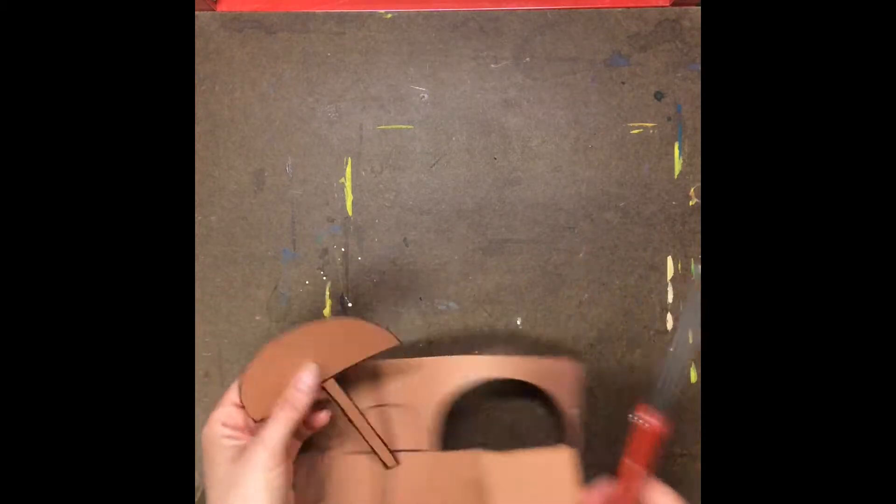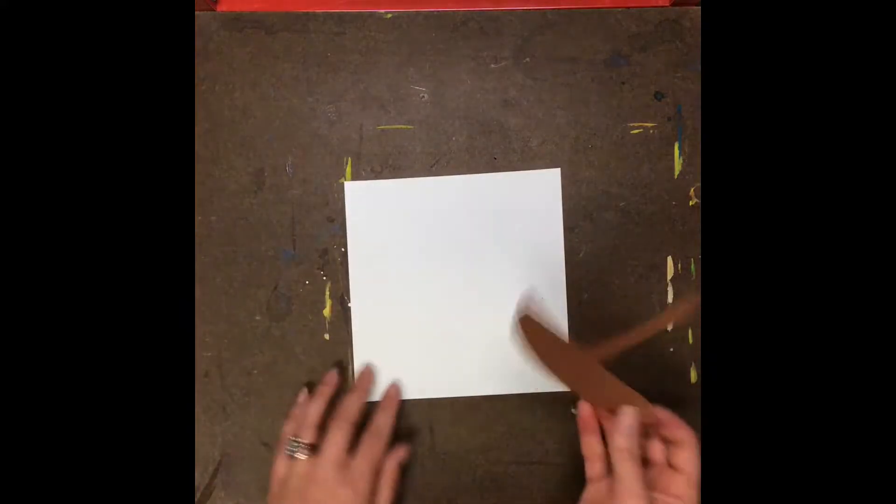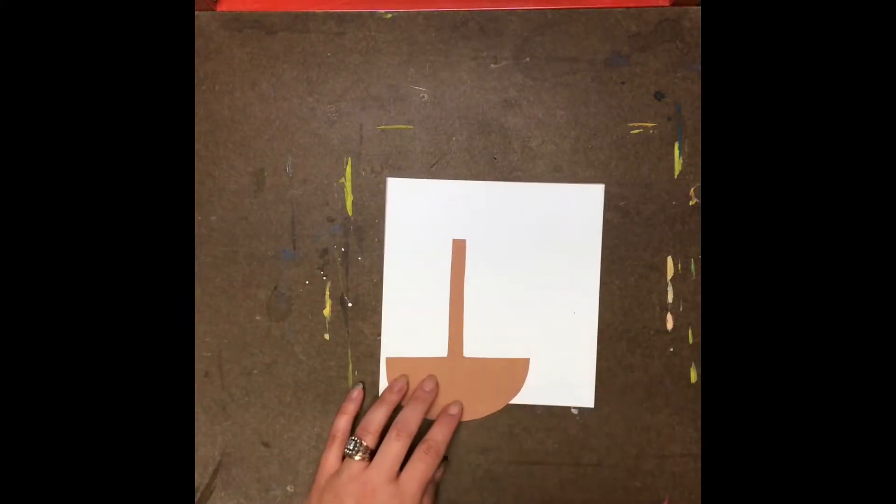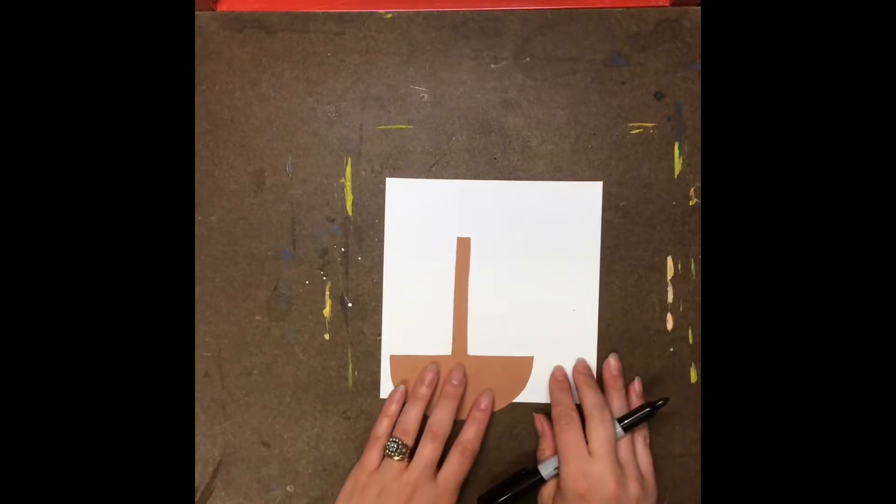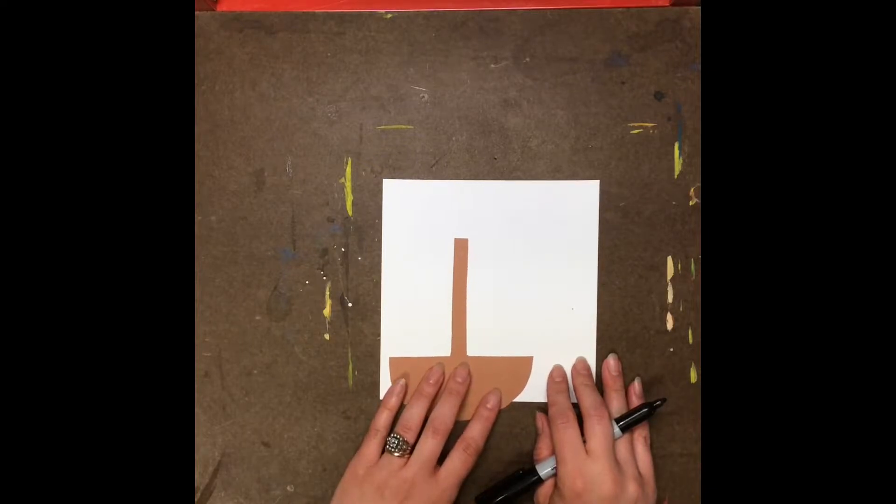Now after you have the brown part of your boat cut out I like to use it to help me make the sails the right size. So once again I'm going to lay my boat on the white paper and then I'm going to draw my sails.